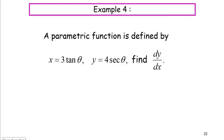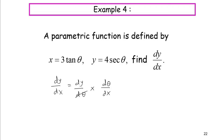Let's look at example 4. We have a parametric function defined by x equals 3 tangent theta and y equals 4 secant theta. We have to find dy/dx. To find dy/dx, we need to find dy/dθ multiplied with dθ/dx — when we cancel dθ, we get dy/dx.